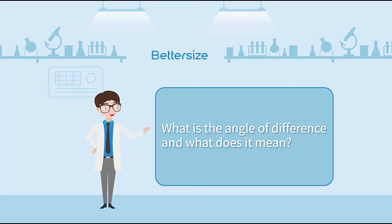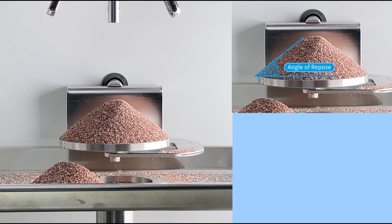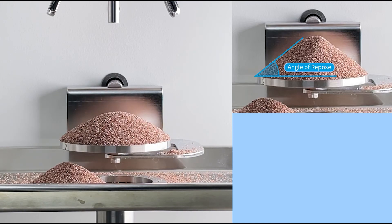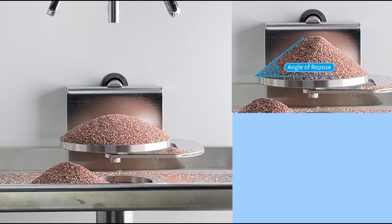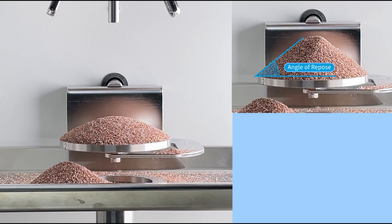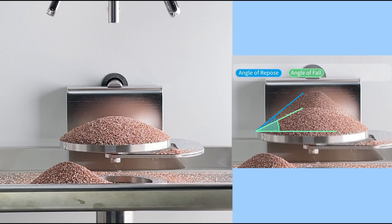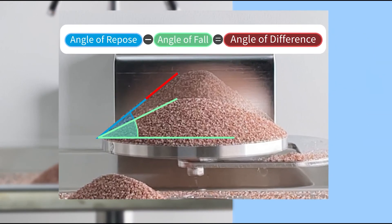What is the angle of difference and what does it mean? After measuring the angle of repose, apply an external force to the powder pile to collapse it. The angle between the slope of the collapsed pile and the horizontal plane is defined as the angle of fall. The angle of difference is calculated by subtracting the angle of fall from the angle of repose. A larger angle of difference suggests better floodability.